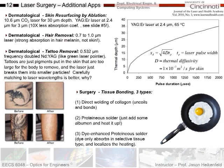Lasers can be used for hair removal by picking wavelengths with strong absorption in hair melanin but not skin, so you don't burn the skin. You can also use lasers for tattoo removal — for example, a 532 nanometer laser, similar to a green laser pointer. Tattoos are pigments placed in the skin that are too big for the body to remove. The laser breaks them into smaller particles so the body can gradually make them disappear. The green wavelength is carefully matched so it's absorbed by the tattoo pigments and not the surrounding skin.